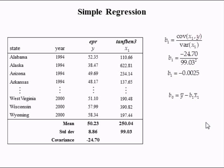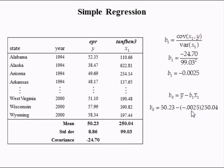To compute the least squares estimate of the intercept, we plug in the mean for Y, 50.23%, and the mean for X, $250.04. We also plug in the estimated slope, which is negative 0.0025 percent per dollar. The dollars cancel, leaving percent minus percent.